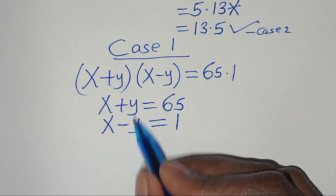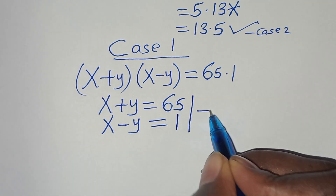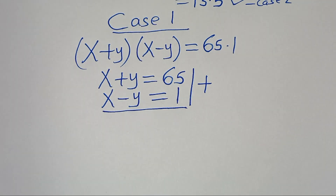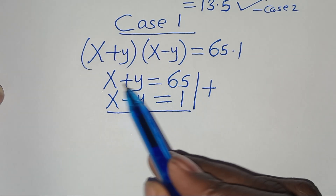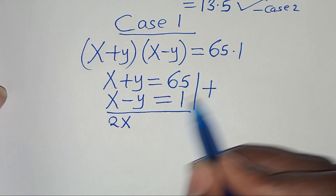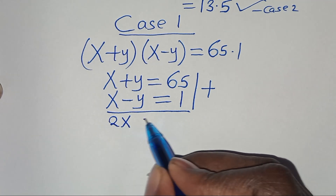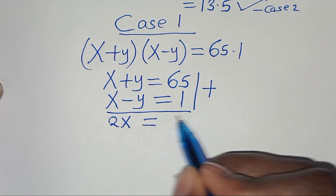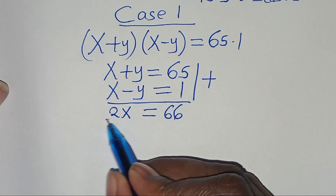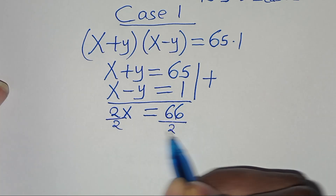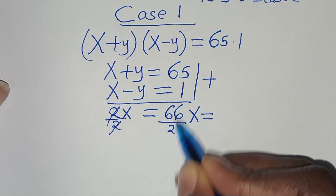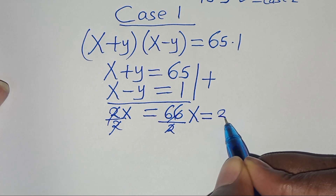These are two simultaneous equations. Let's add them: x plus x gives 2x, and y plus negative y simplifies to zero, so 2x equals 65 plus 1, which is 66. Dividing both sides by 2, we get x equals 66 divided by 2, which is equal to 33.